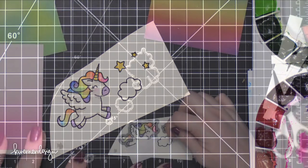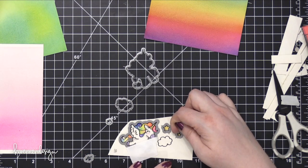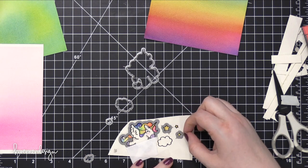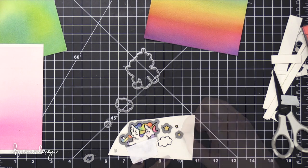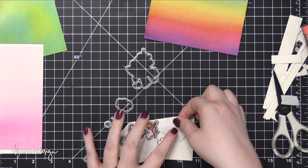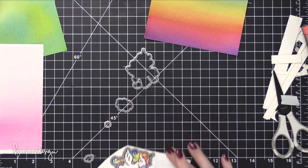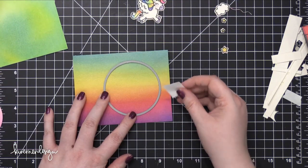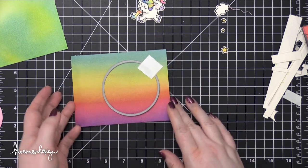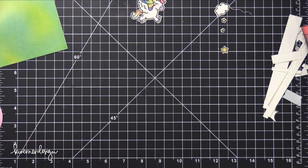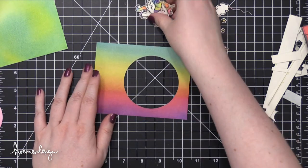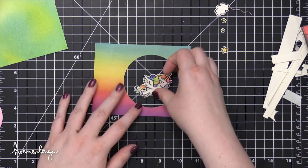So like I said before, there are some coordinating dies for the stamp set, so I used those and placed them directly over top of my critter and the stars. Use a little bit of Post-It tape to hold those in place, and then ran them through my Big Shot machine to cut them out. I also took a circle from the Nested Circle set from Simon Says Stamp and cut a circle out of my background piece. And I can save that other circle for another card if I want to.